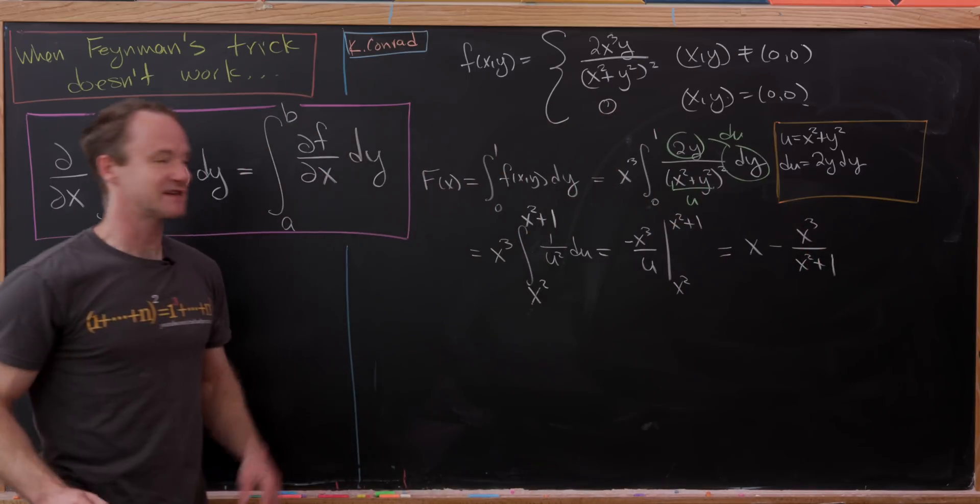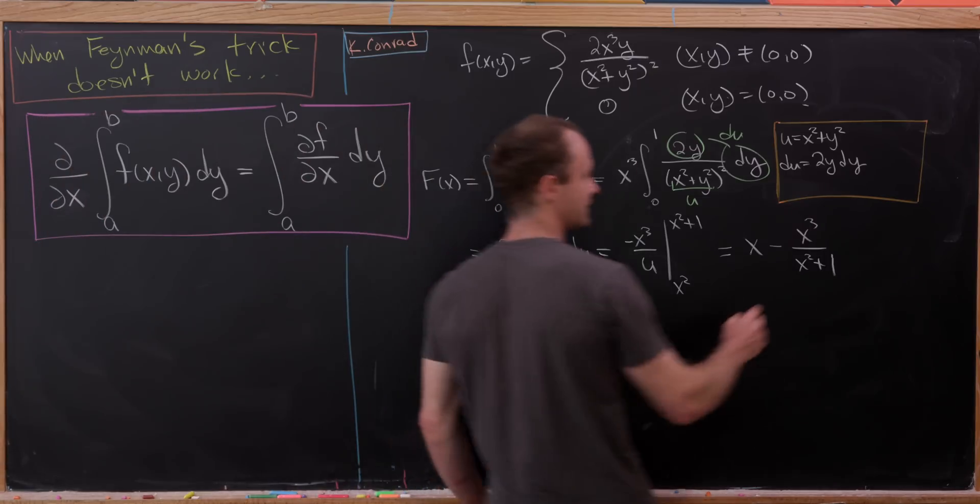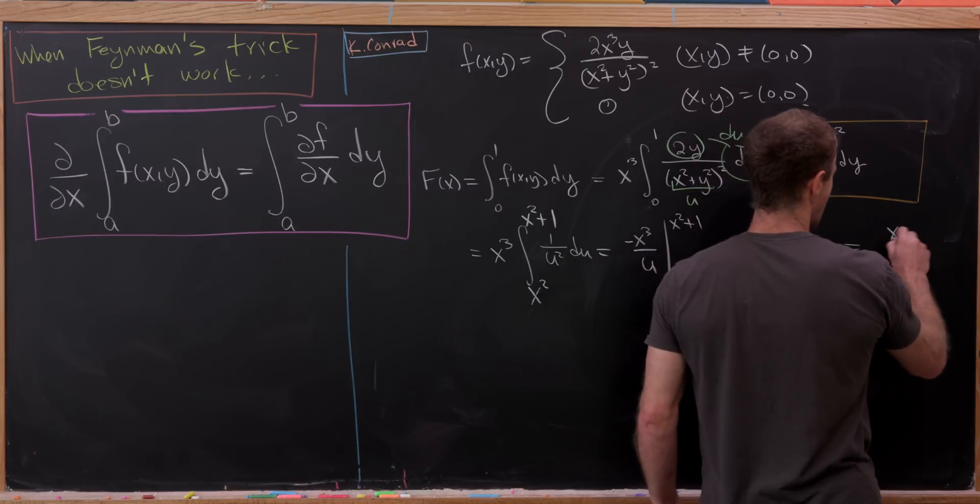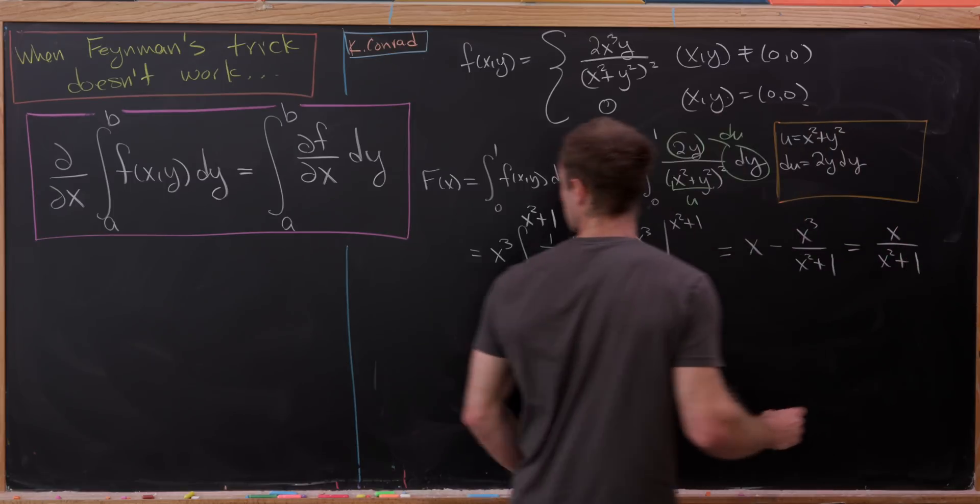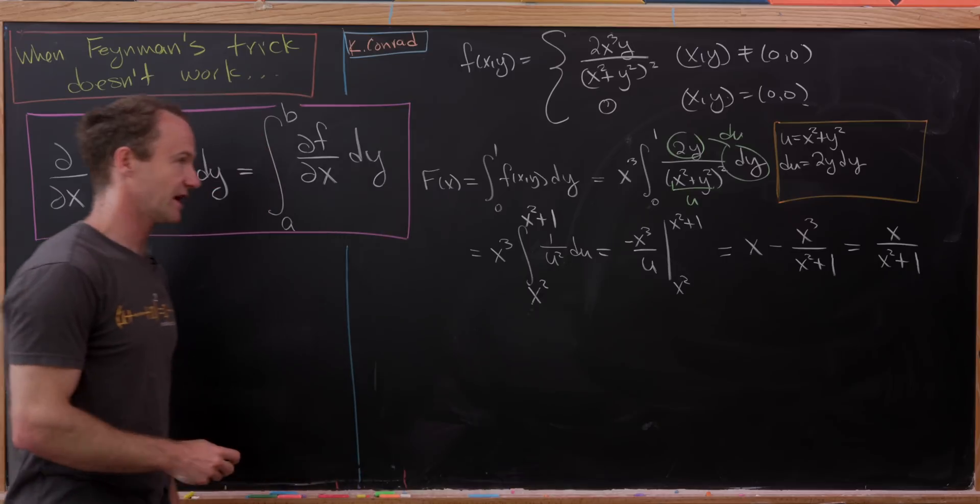And then for the next part, we'll have x cubed over x squared plus 1. So that's what this evaluates to. But now we can smash both of these together and we'll see that we get x over x squared plus 1.